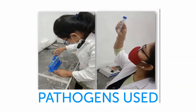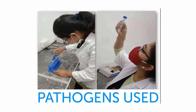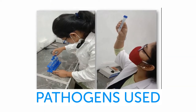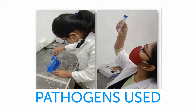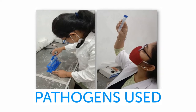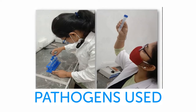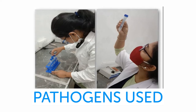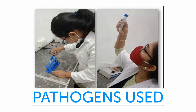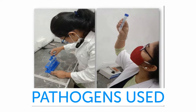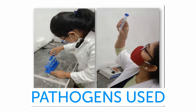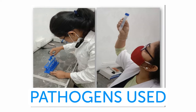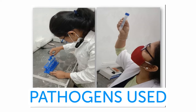Pathogens used: The common dairy pathogens used include E. coli, which were collected from milk of a mastitis cow, and Salmonella species, which were collected from drainage water of cattle yards. Both samples were collected in centrifuge tubes.